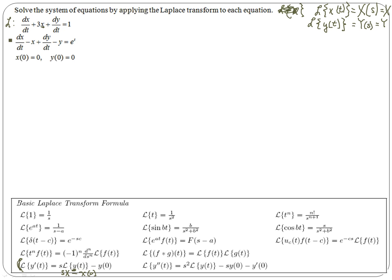So let's take each one of these equations and apply the Laplace to it. This first equation gives us the Laplace of dx/dt — that's our first derivative — which is going to give us sX minus x(0), plus three times the Laplace of x, which is just capital X, plus the Laplace of dy, which gives us sY minus y(0), equal to the Laplace of one, which is one over s.